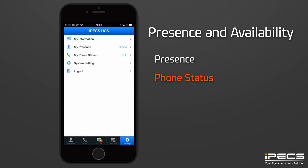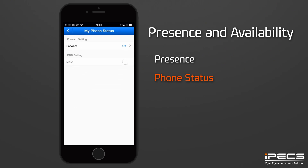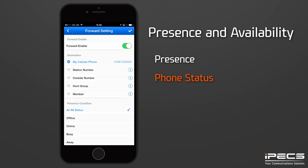In the settings menu, select the My Phone Status option to set your phone to Do Not Disturb mode or to set up call forwarding. Do Not Disturb mode will prevent your IPEX UCS client from receiving calls when you are busy, and callers will receive a busy tone or be redirected to voicemail if set up. Forward allows you to redirect incoming calls to other extensions, to an outside number, or to your voicemail. Select or enter the destination number, set the forward condition, and then select Forward to activate call forwarding.